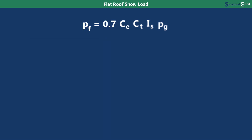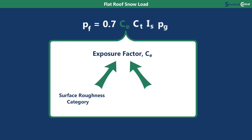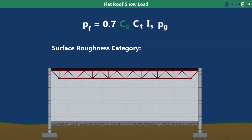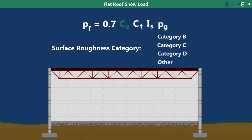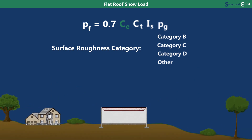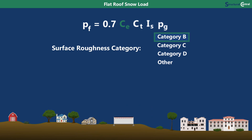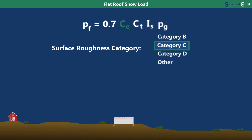The second factor is CE, or the exposure factor, which accounts for wind blowing snow off the roof. Its value can be found in a table in ASCE 7, and it depends on two conditions: the surface roughness category and the exposure of the roof. The surface roughness category accounts for obstructions in the upwind direction within about a mile of the building. A region with lots of large obstructions from buildings or trees will be less windy than a flat, open region. Category B is for urban, suburban, or wooded areas.